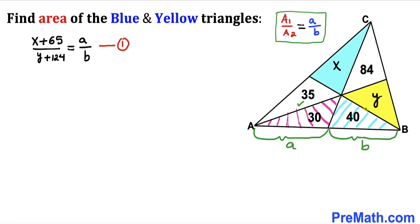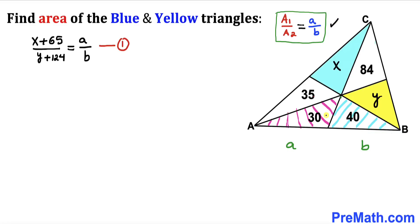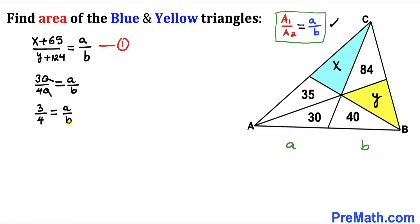Now let's focus on two smaller triangles with the same height. The base of the left is a and the base of the right is b. Applying the formula: 30 / 40 = a / b. Simplifying by cancelling the zeros gives 3 / 4 = a / b. This is equation 2.